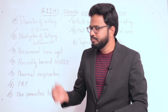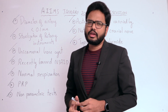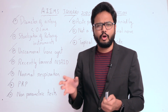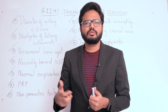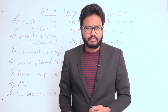Aminoglycosides applied only topically include neomycin and framycetin, because of their high systemic toxicity. You can also find a table listing systemically used aminoglycosides and their associated ototoxicity and nephrotoxicity.